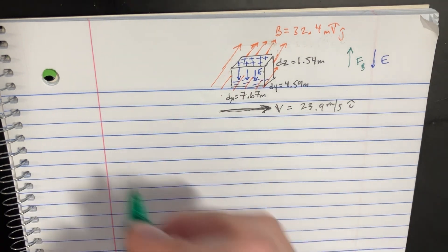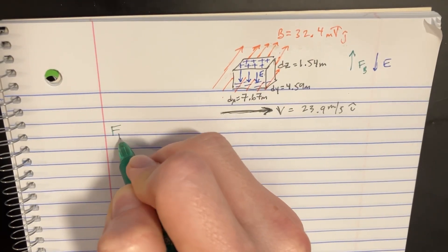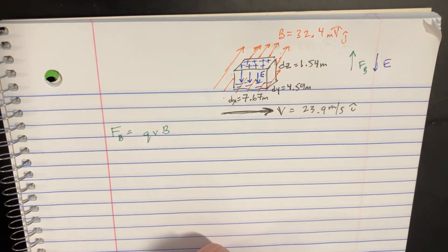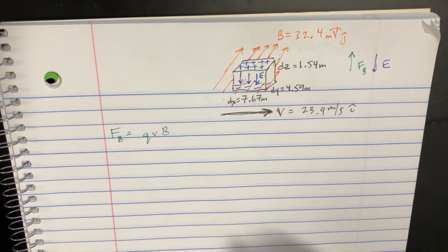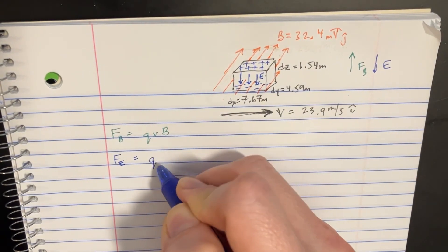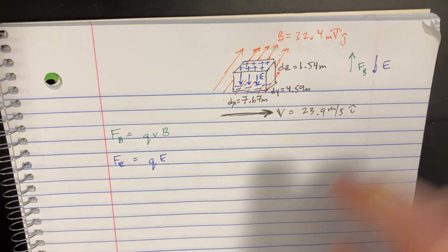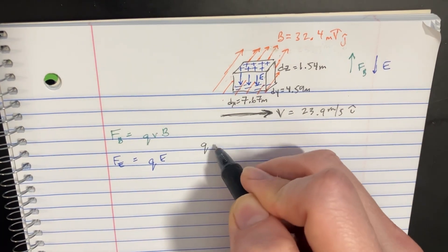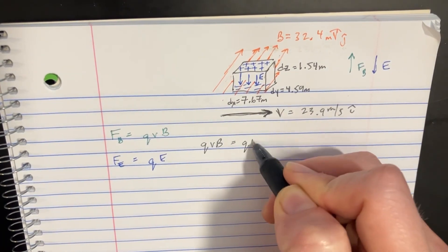So we can represent that over here, saying that the FB is supposed to be QVB, and the force from the electric field is supposed to be QE. And because these two things are opposing each other, they're supposed to be equal. So we're just going to say QVB equals QE.